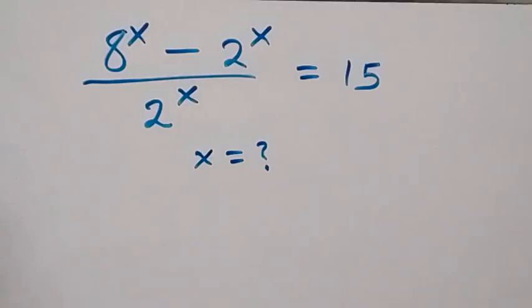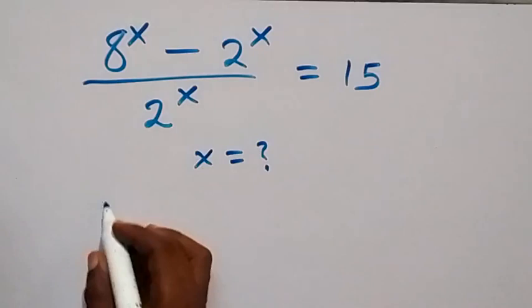Hello, you are welcome. How to solve this exponent problem: we have (8^x - 2^x) / 2^x = 15. From here we can separate this as 8^x / 2^x minus 2^x / 2^x equals 15.